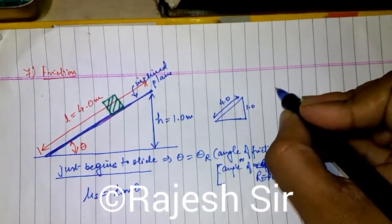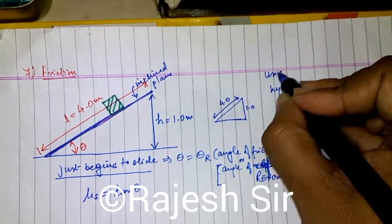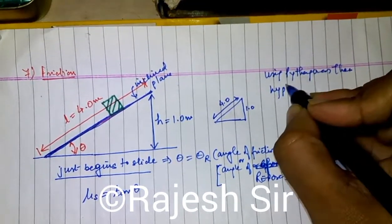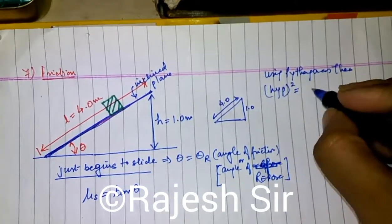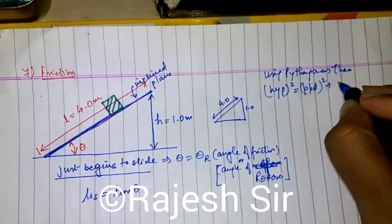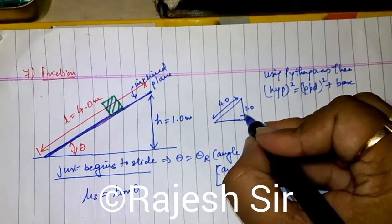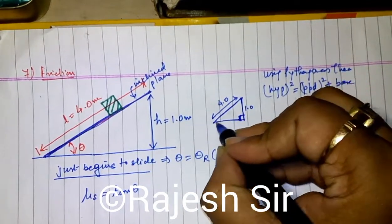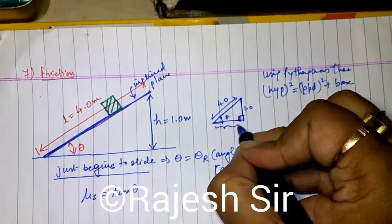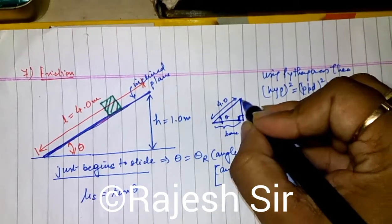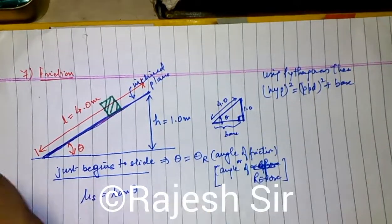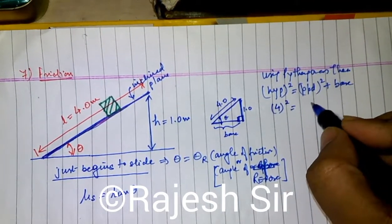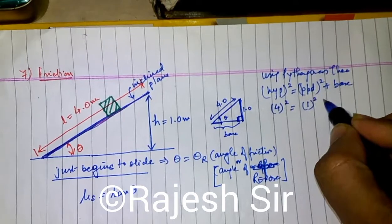Pythagoras theorem says that hypotenuse square is equal to perpendicular square plus base square. In a right angle triangle, 90 degree is opposite to hypotenuse. So, hypotenuse is 4 square. Perpendicular is 1 square. And base we need to find.